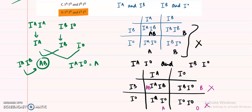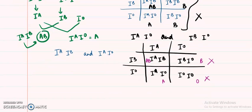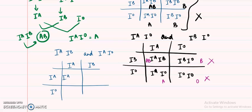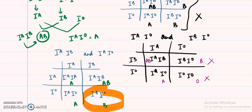For the last option D — IAIB crossed with IAIO — the Punnett square gives IAIA (A), IAIB (AB), IAIO (A), and IBIO (B). Since B blood group also appears here, this option is ruled out. Be patient while making Punnett squares in the exam, because a small mistake will give you a wrong phenotype.